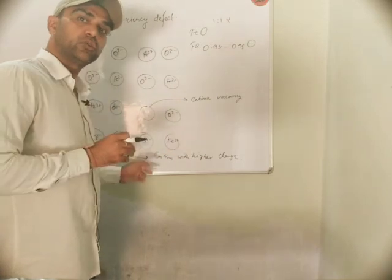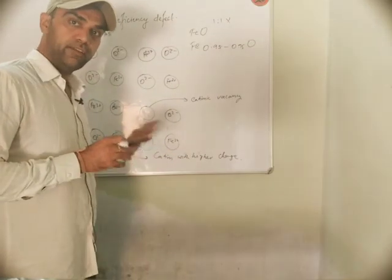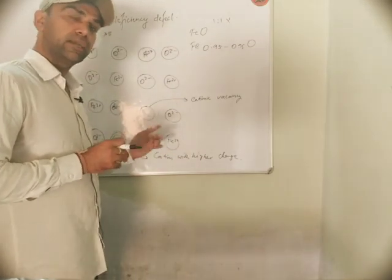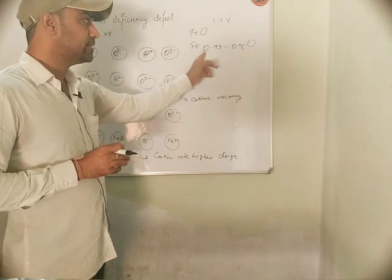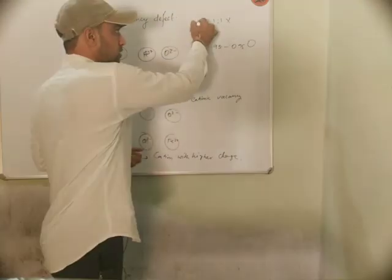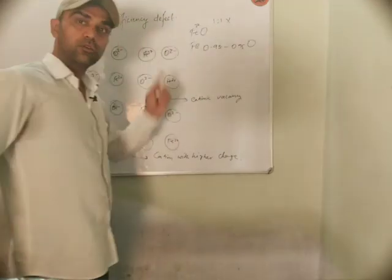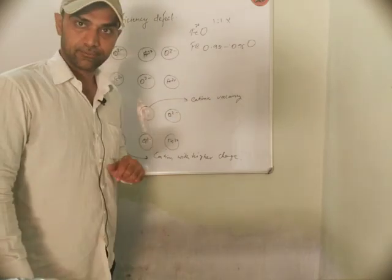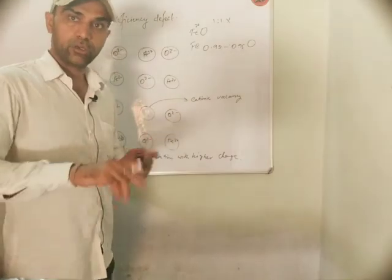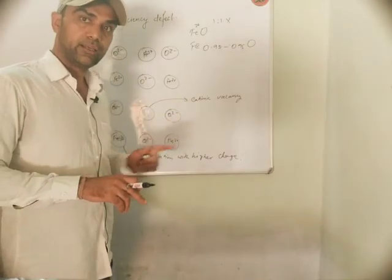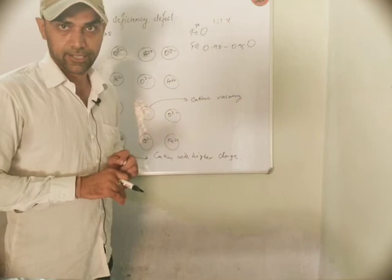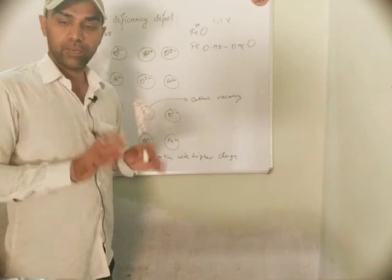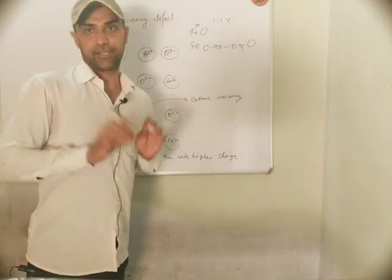Because Fe2 positive is reduced — some Fe2 positive converts to Fe3 positive. So the amount of Fe2 positive in the lattice decreases, which means the iron content overall is less than what the formula FeO suggests. This is all about metal deficiency defect.